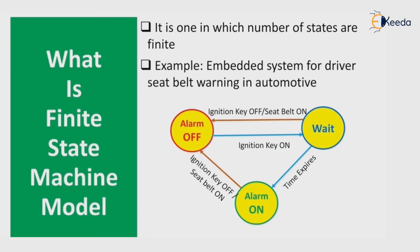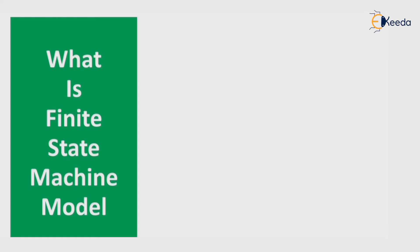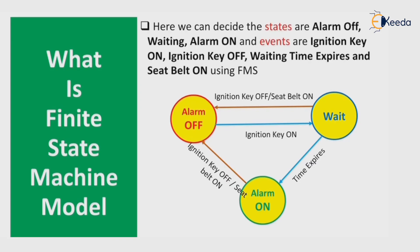This is a finite state machine model which includes an alarm off state, alarm on state, and a wait state. Depending on whether the seat belt is on or off, the system works. Here we can identify the states as: alarm off, waiting, and alarm on. The events are: ignition key on, ignition key off, waiting time expire, and seat belt on — using a finite state machine.